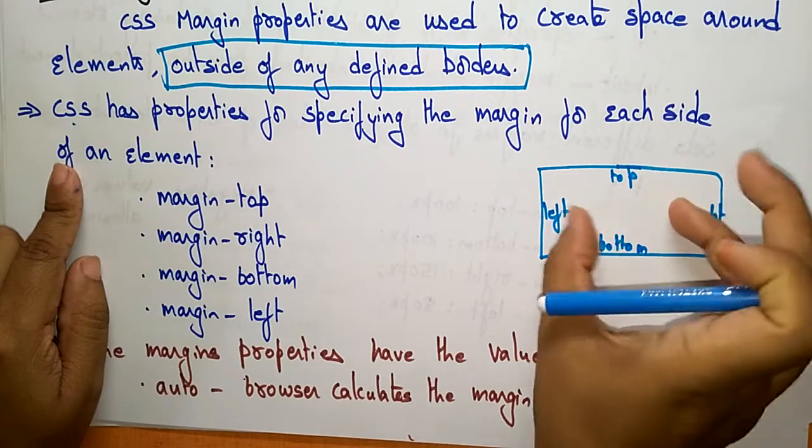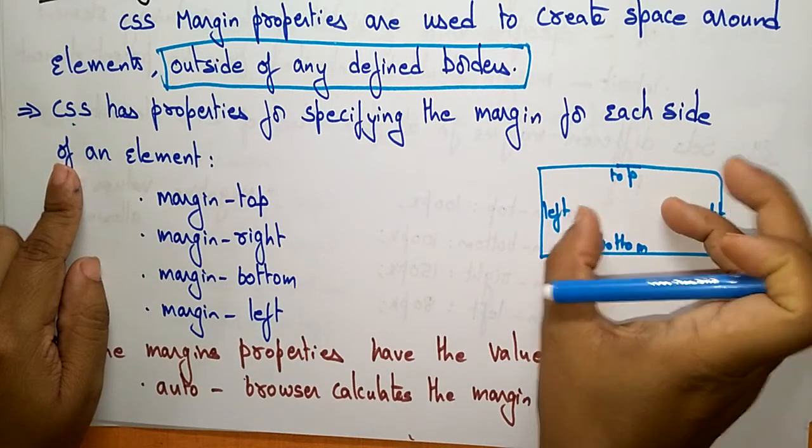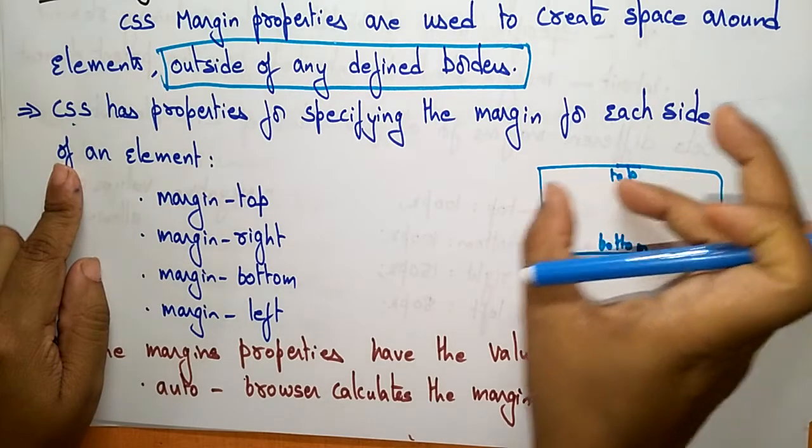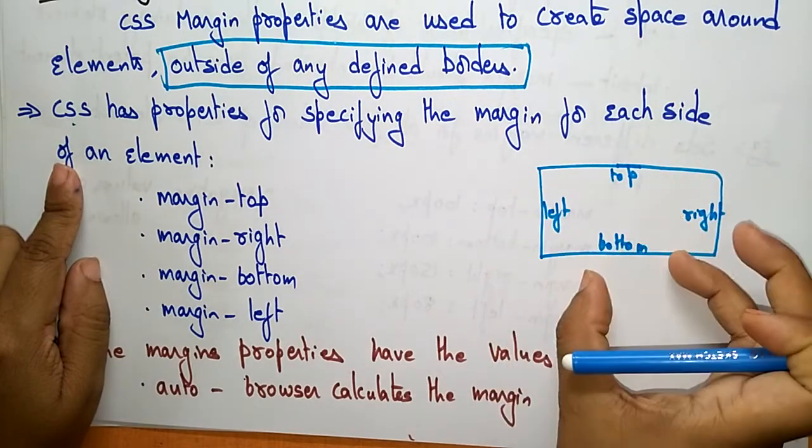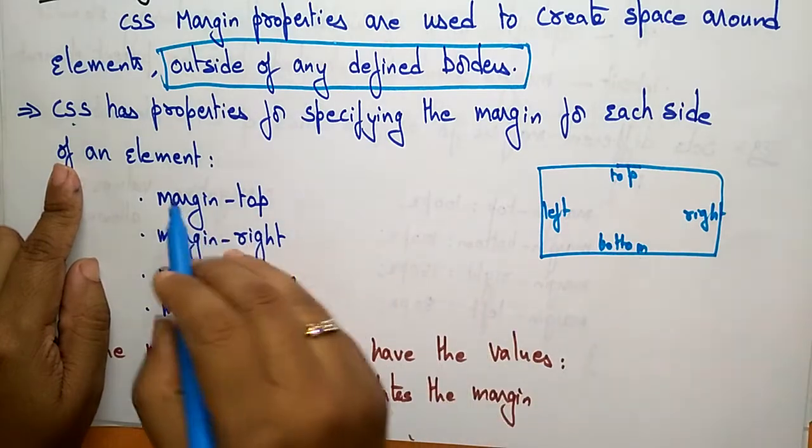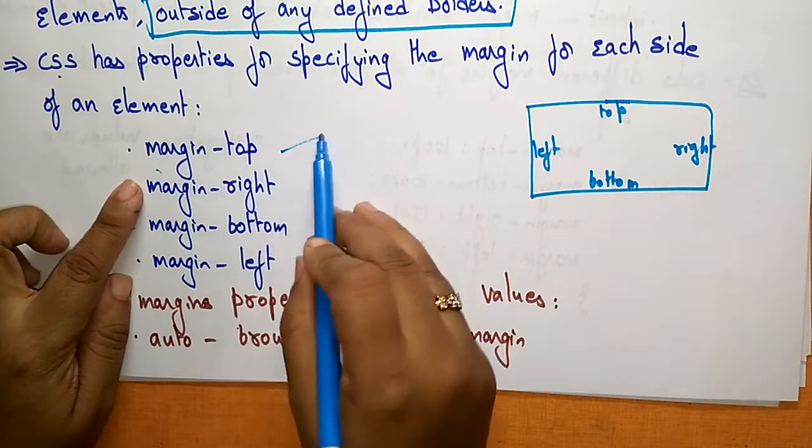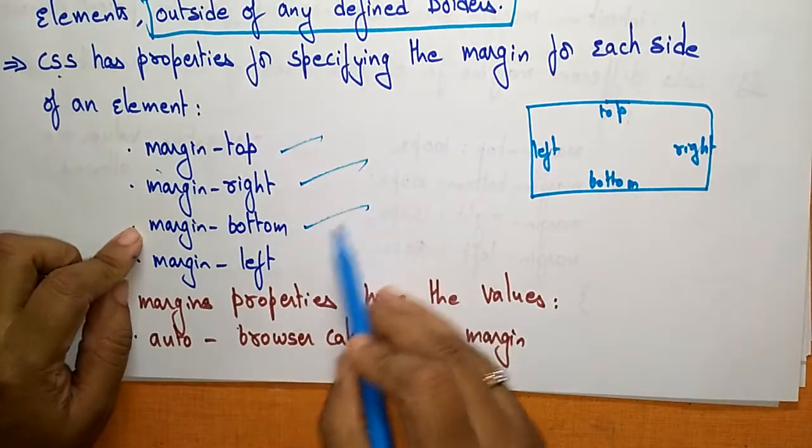Suppose I want to display a paragraph here. Where do I have to display that paragraph - in the center, on the left, on the right, or at the bottom? That can be represented by using the margin property. The margin properties are: margin-top, margin-right, margin-bottom, and margin-left.